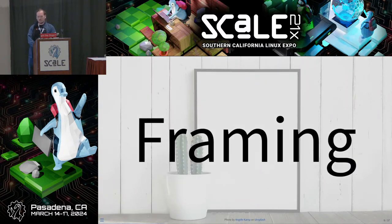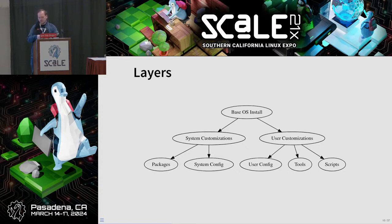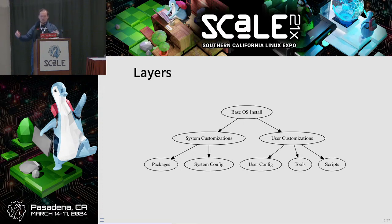I think about my development environment in terms of layers. The most important layer is the base operating system install — that's the foundation for everything else. Then things branch: you have system customizations like packages you install and configuration you change. On the other side, you have per-user customizations — things like config files, tools you install for that user, and scripts you write and use. There are good solutions for sharing and automating all of these things.